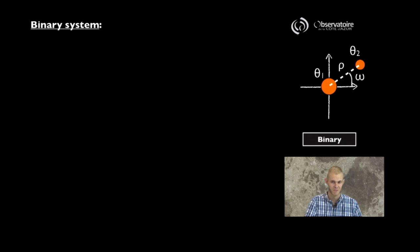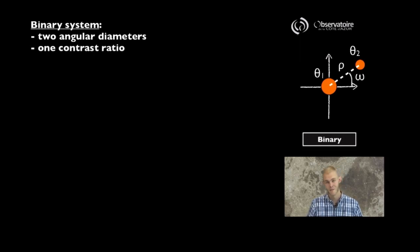Well, a binary system, of course, is characterized by the fact that it's made up of two stars, which means that we're going to have two angular diameters, one for each star. This is going to be characterized by the fact that there may be a difference in the brightness of the two objects. So we're going to introduce some extra parameters that we'll call the contrast ratio.